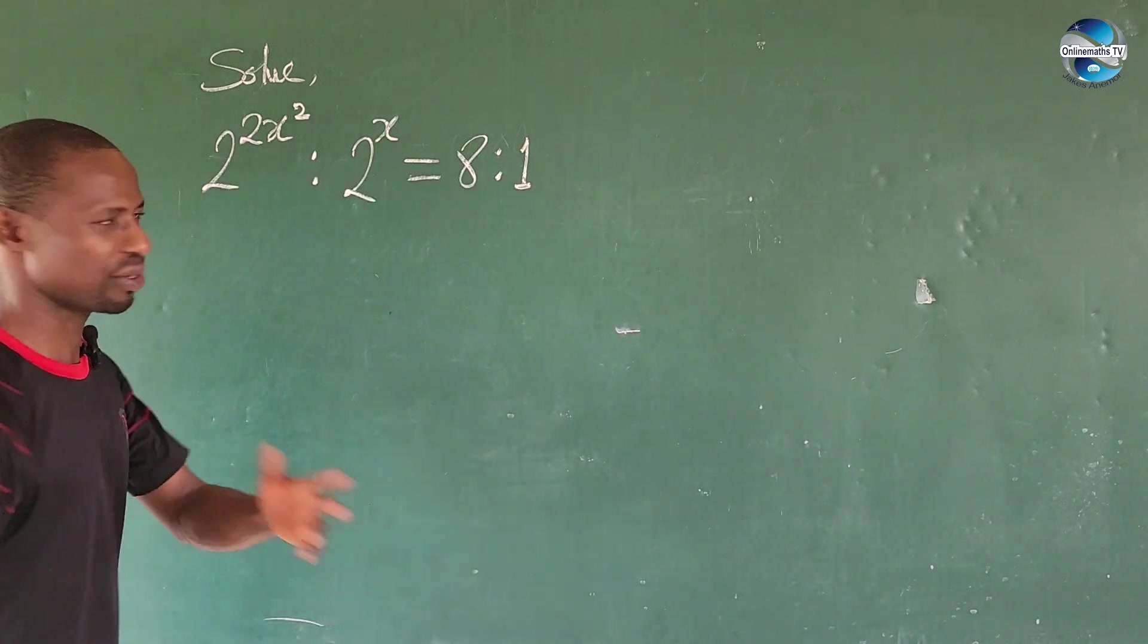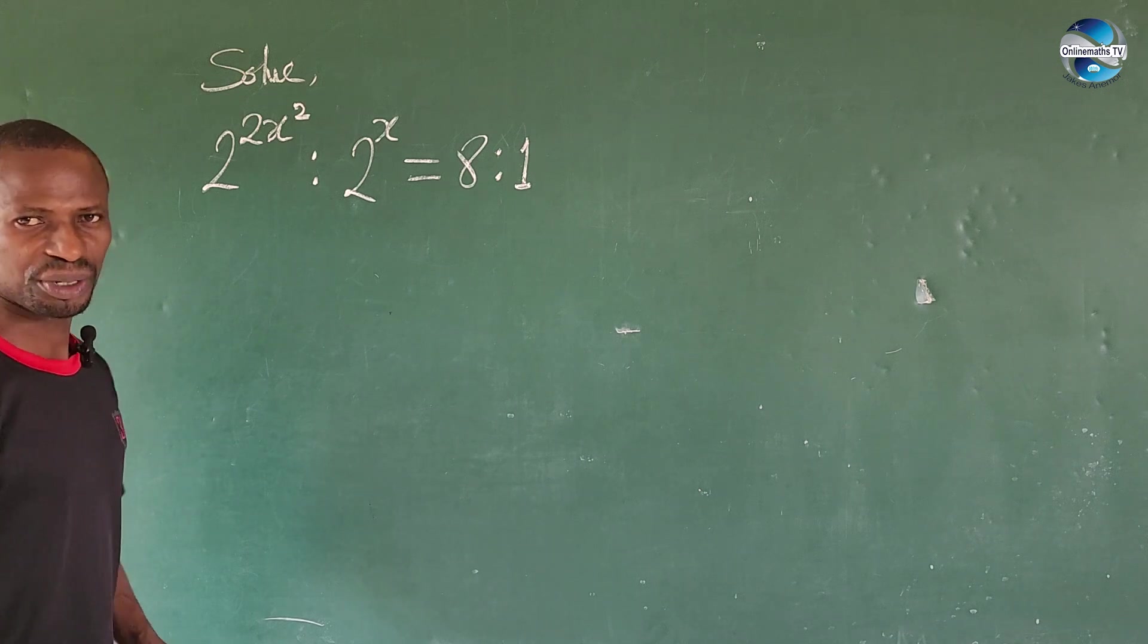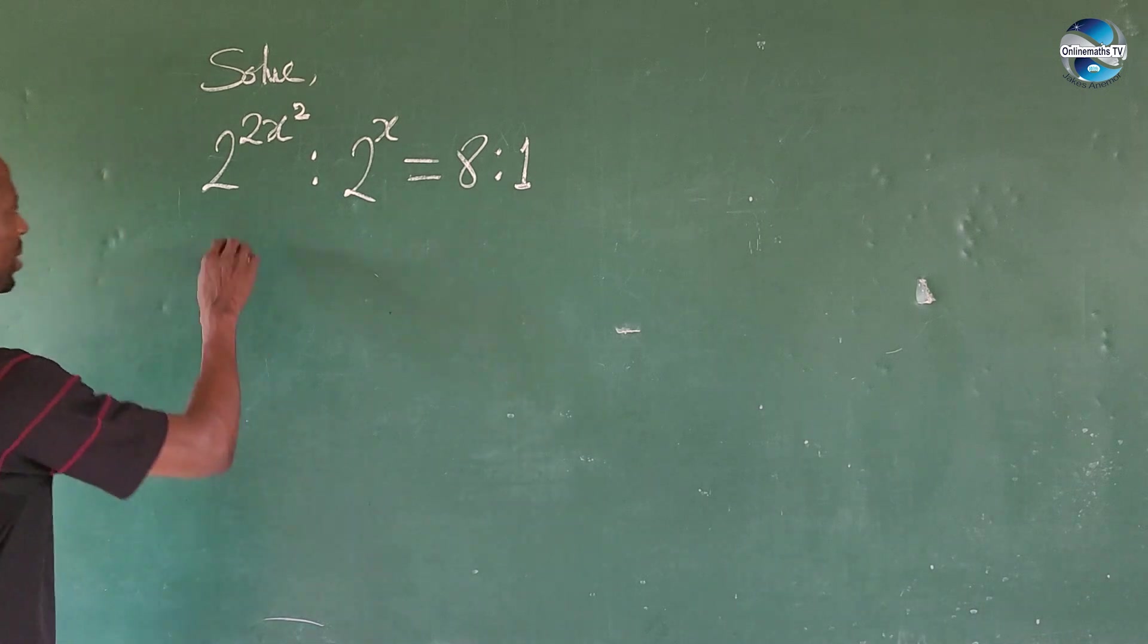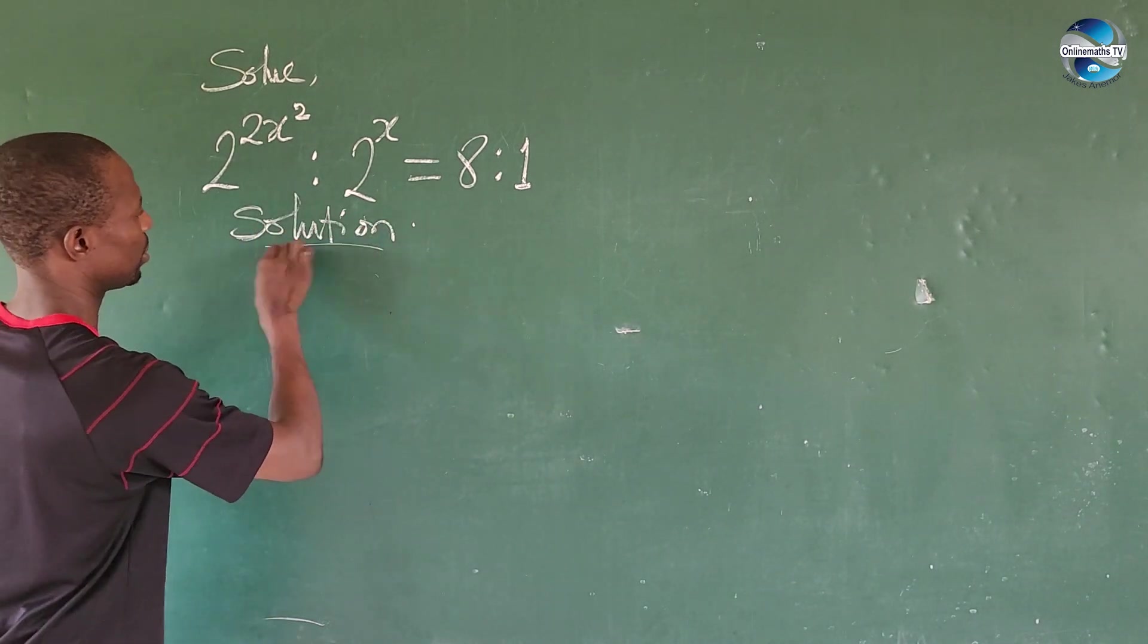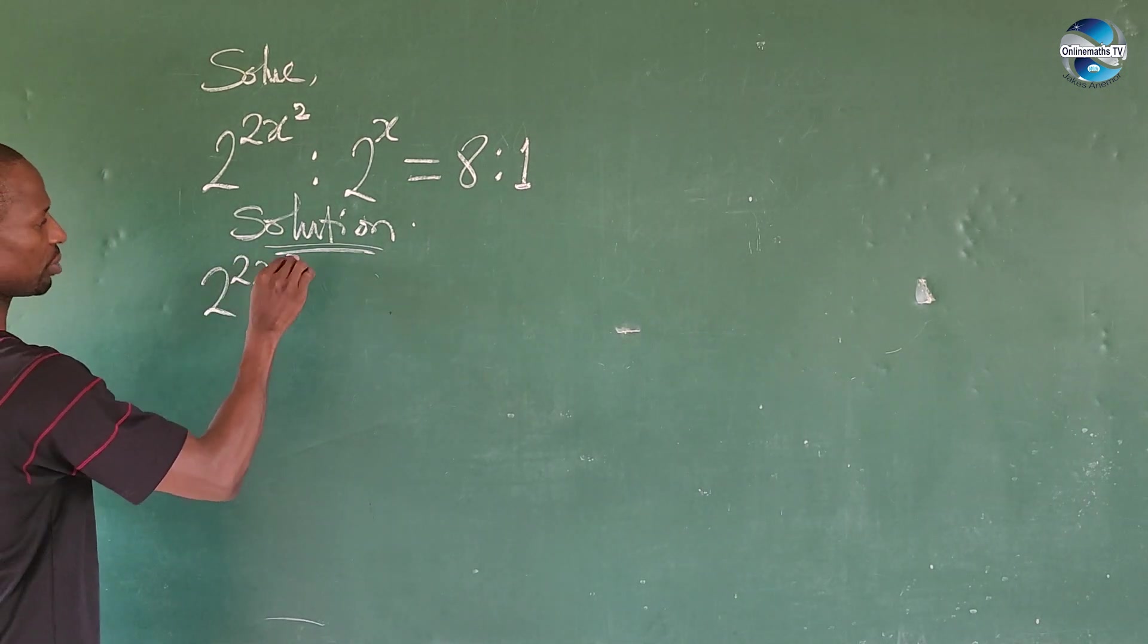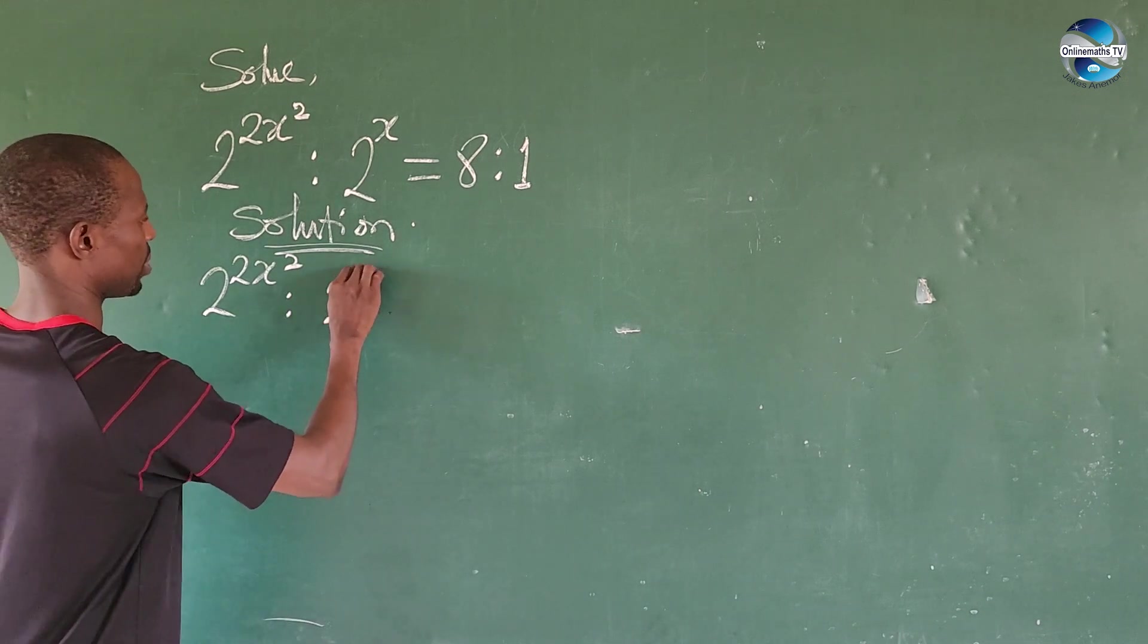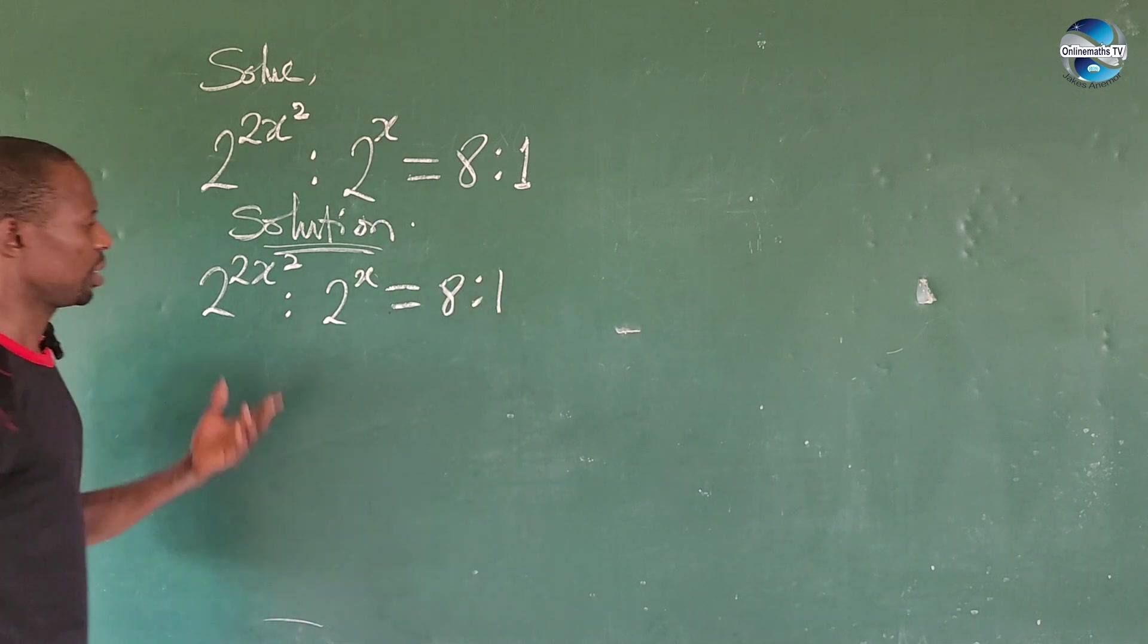Without much introduction, since we want to conserve time - this is simple algebra that is not too high level, you can solve it. Let's take our solution. The question is 2^(2x²) : 2^x = 8:1.